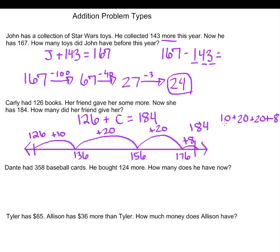20, 40, 50, 8. So Carly's friend gave her 58 books.